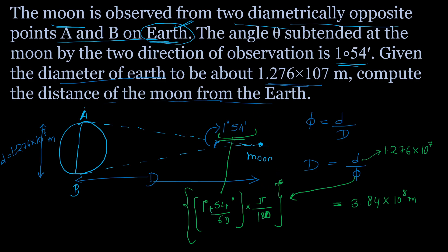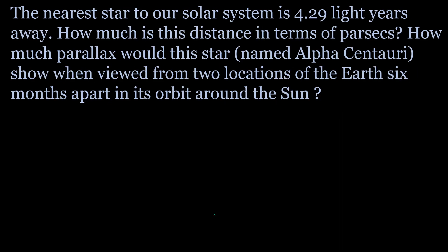The key step here was the conversion of degrees and minutes into radians entirely — first converting minutes to degrees, adding both degree values, then multiplying by pi/180. Next question: the nearest star to the solar system is 4.29 light years away. How much is this distance in terms of parsec?